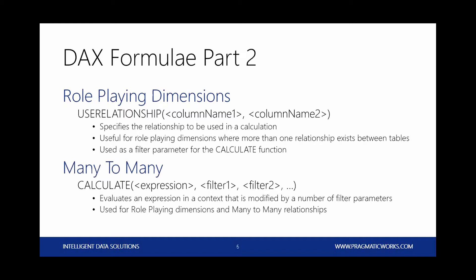For our role-playing dimensions, we'll learn a new DAX formula called USERELATIONSHIP. USERELATIONSHIP is the function we'll use to define how to use an inactive relationship in a Power Pivot model. For our many-to-many relationships, we'll also use the CALCULATE function. CALCULATE evaluates an expression and applies a series of filters to add additional context to the calculation. The more experience you get with Power Pivot, the more you'll realize how powerful the CALCULATE function is.